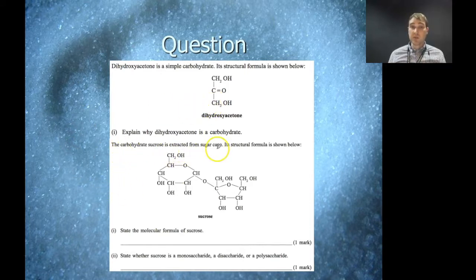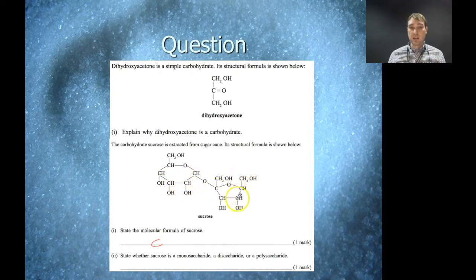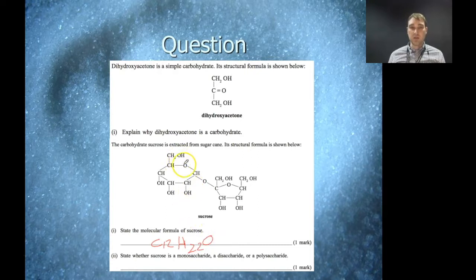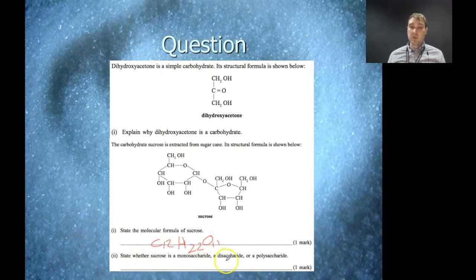The next question says the carbohydrate sucrose is extracted from cane sugar — state the molecular formula of sucrose. Counting the atoms in the structural formula: 12 carbons, 22 hydrogens, and 11 oxygens, giving C12H22O11 — which is the general formula you usually get for most disaccharides. The question also asks whether sucrose is a mono-, di-, or polysaccharide. There are two rings of carbohydrate joined together, so that makes it a disaccharide.